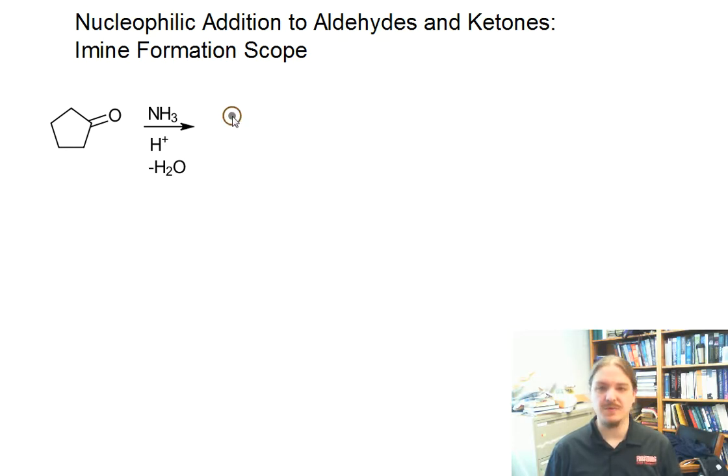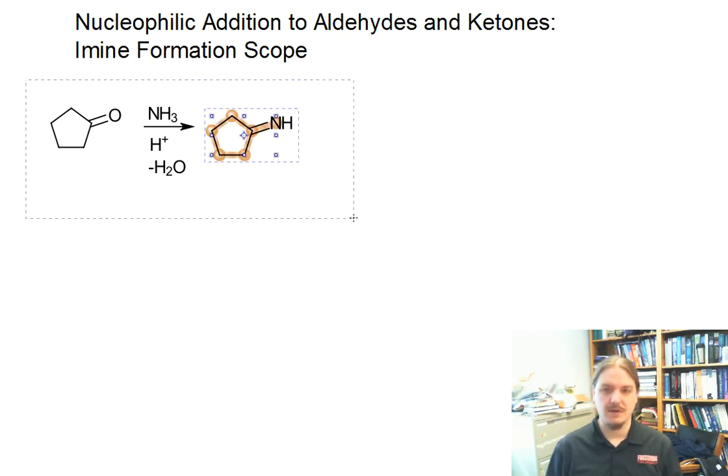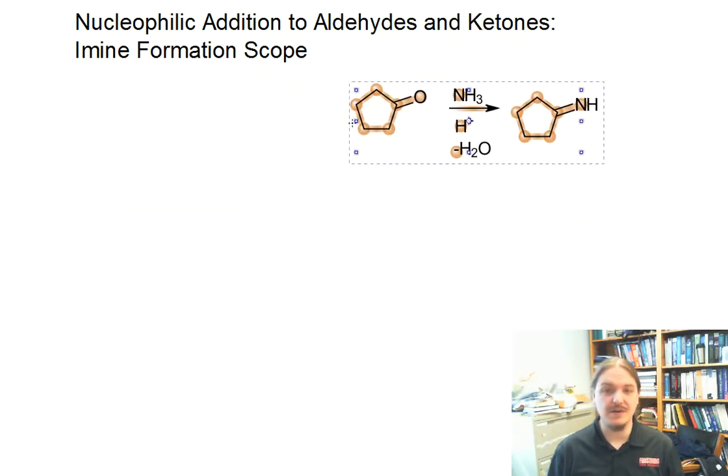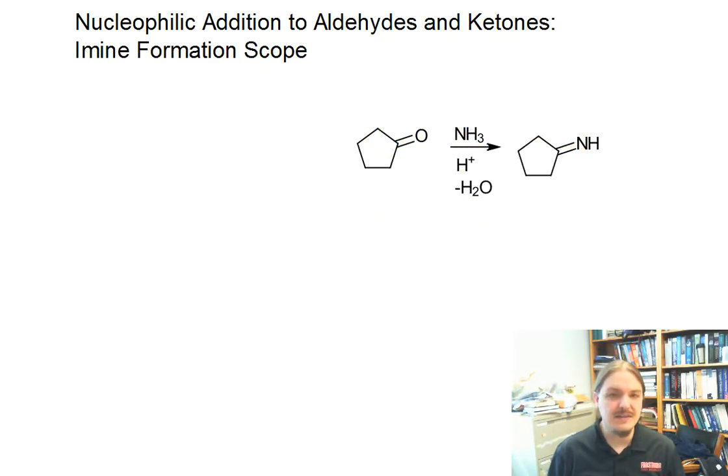For example, cyclohexanone reacts with ammonia. Let's give a subheading for ammonia if you want to compare the different types of nitrogen nucleophiles.